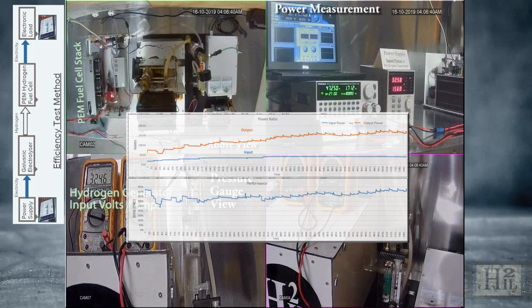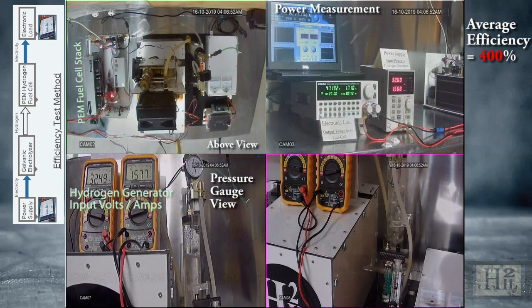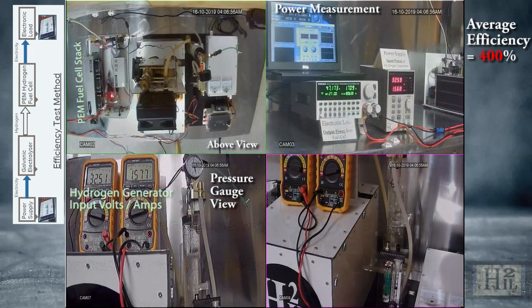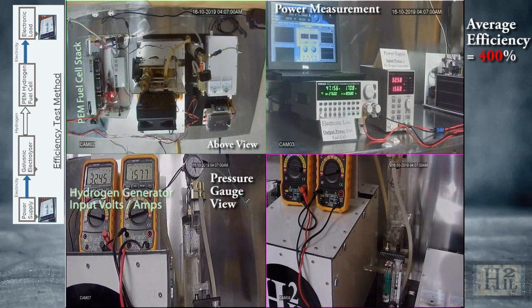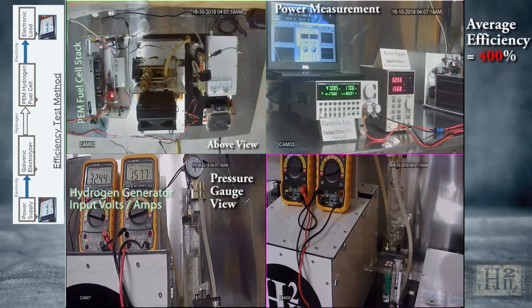Even if the fuel cell was 100% efficient, the displayed output readings are still higher than the input. How is that possible? Energy is not being created, which is impossible, but rather two energies are being transformed and combined into a greater energy. It's as simple as 1 plus 9 equals 10.